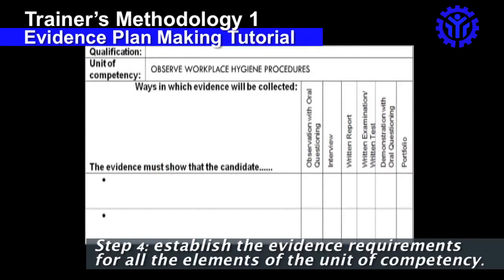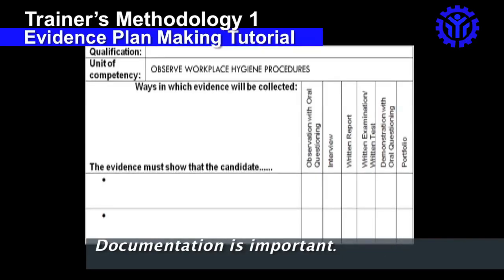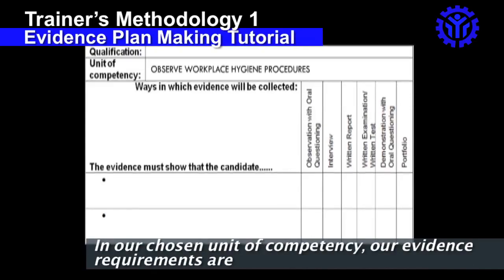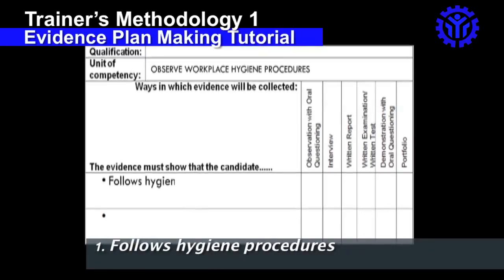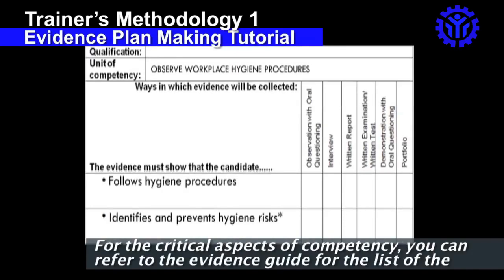Step 4: Establish the Evidence Requirements for all the elements of the Unit of Competency. In establishing the Evidence Requirements, documentation is important. Write the Evidence Requirements in the left-hand column of the template of the Evidence Plan. In our chosen unit of competency, our evidence requirements are 'Follows Hygiene Procedures' and 'Identifies and Prevents Hygiene Risks.'